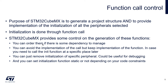You can order them — there are some dependencies to manage, so you can put one initialization function before the other. You can avoid the implementation of the call but keep the implementation of the function itself, so you have the function and you will call it yourself at some point later. You can also completely remove the initialization of a specific peripheral if you want to remove it temporarily or for debug purposes. And you can also set the function to be static or not.